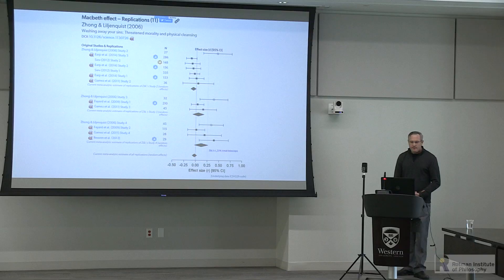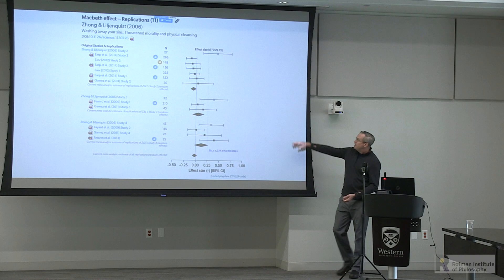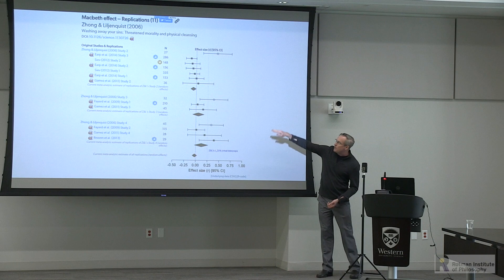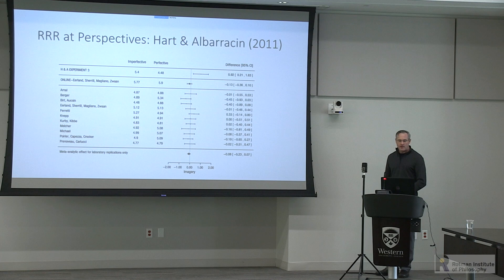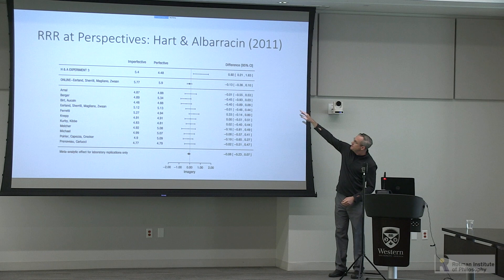Another example: Zhang and Luenquist — you can see the original effect and the different replication attempts. I also want to highlight that the curatescience.org website provides links to study materials, data, code, and all the R code needed to rerun all the meta-analyses, including an Excel file with all effect sizes. So 50 years from now, you can still get all the information used to create the website. Similarly, a Registered Replication Report from Hart and Albarison shows the original effect and the pooled effect size across all participating labs.